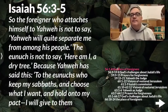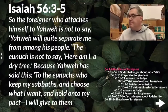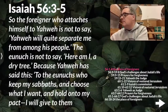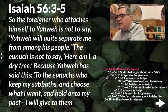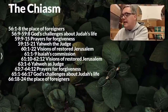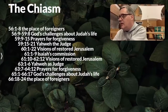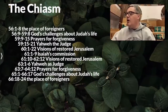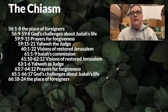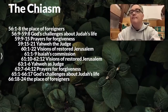An audience member asks for a handout of the chiasm diagram with the verses. The speaker offers to take a snapshot of the screen and send it, or to prepare a separate sheet. He acknowledges it's a little detailed but expects it will become clearer the further they go through the material.